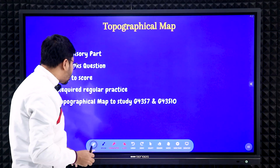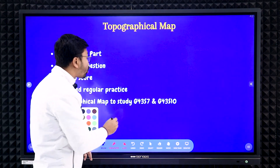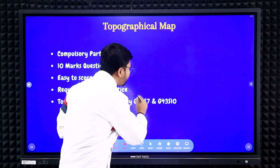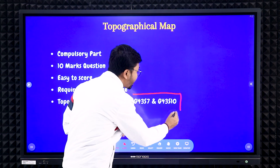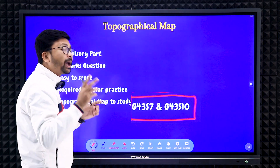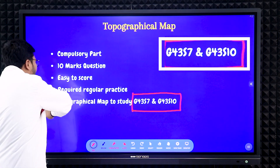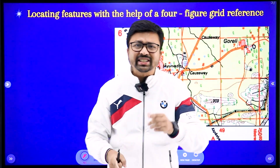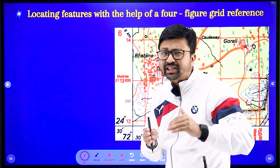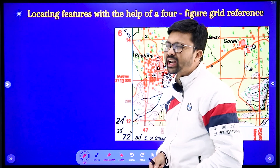According to your syllabus, you need to practice just two topographical maps: G43S7 and G43S10. These are the only two you need to practice, nothing more. We'll discuss each topic one by one — what type of question will be asked and what easy tricks to apply to get those marks.